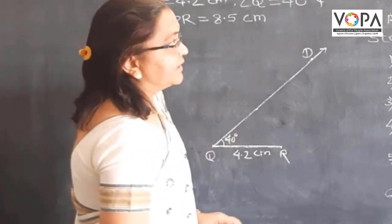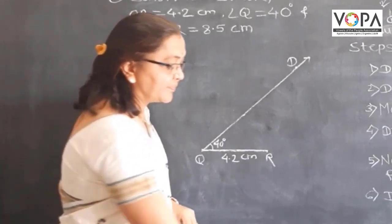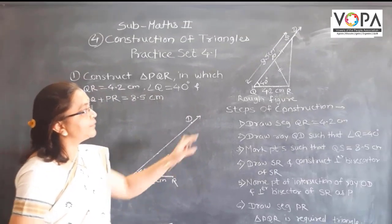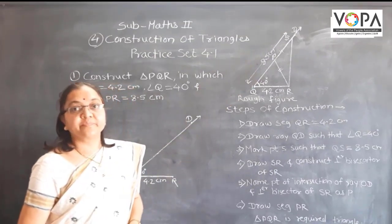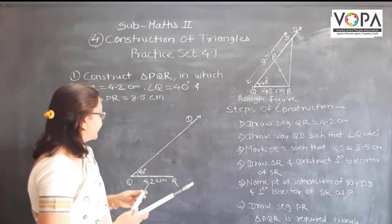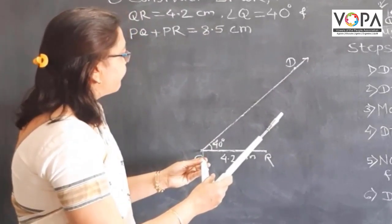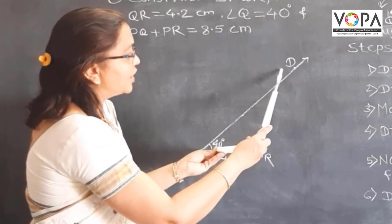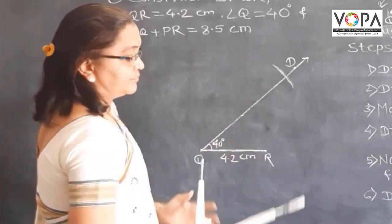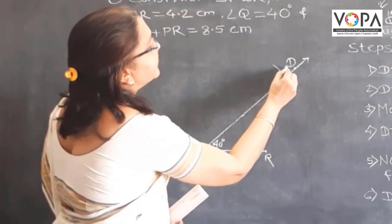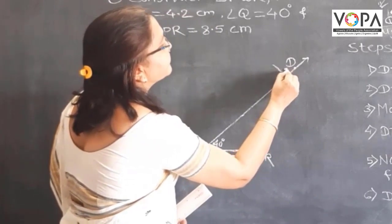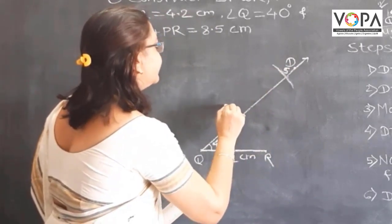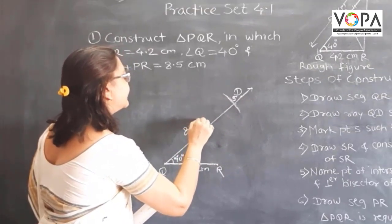Then we have to fix point S. For that, take 8.5 cm distance in your compass. Fix point S taking Q as a center. Draw an arc. This is your point S, and this distance is 8.5 cm.